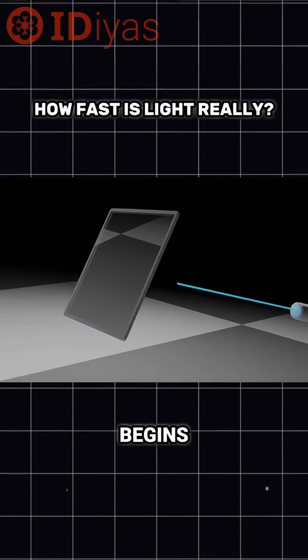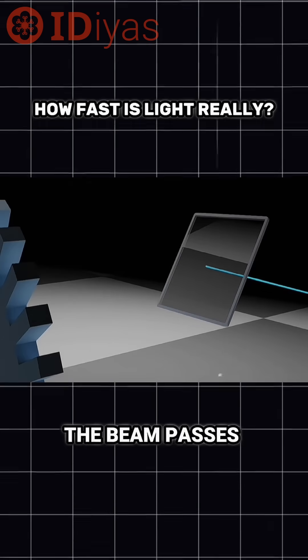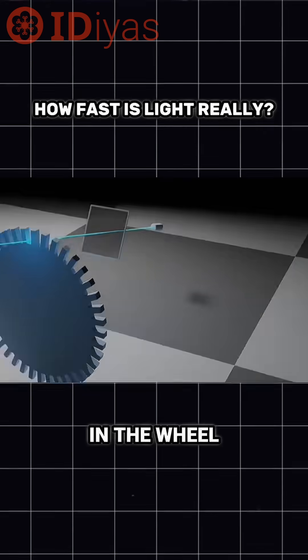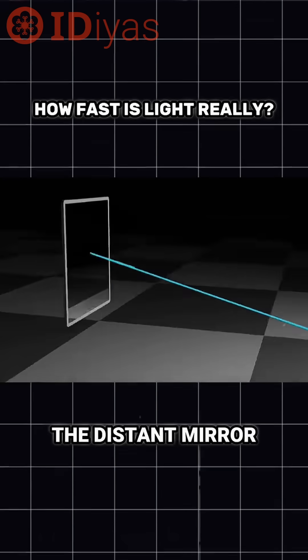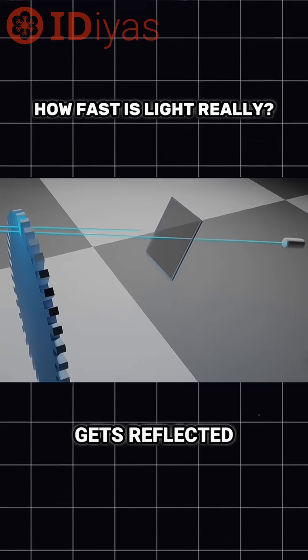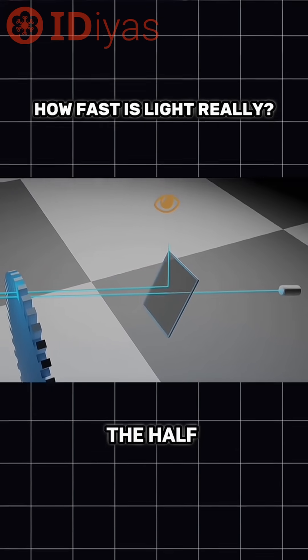And now the experiment begins. When the light is turned on, the beam passes through the half-silvered mirror, goes through one of the gaps in the wheel, travels all the way to the distant mirror, bounces back, passes through the wheel again, and finally gets reflected into the viewer's eye by the half-silvered mirror.